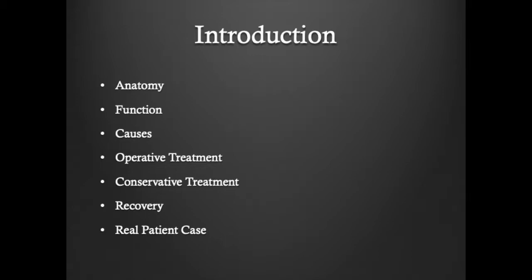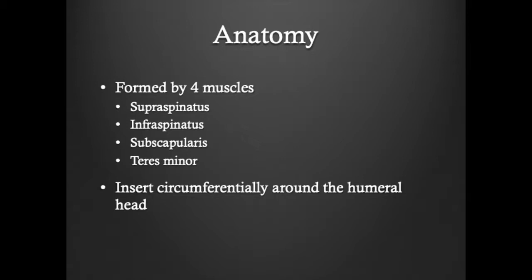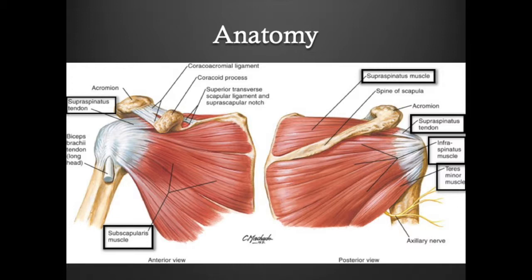And then end with a real patient case. The rotator cuff is formed by four muscles. These muscles insert circumferentially around the humeral head, protecting the joint. The supraspinatus tendon runs over the top of the shoulder and is the most commonly injured rotator cuff.